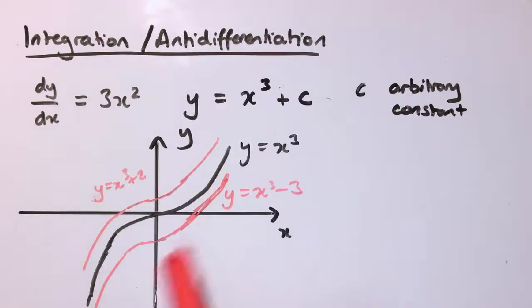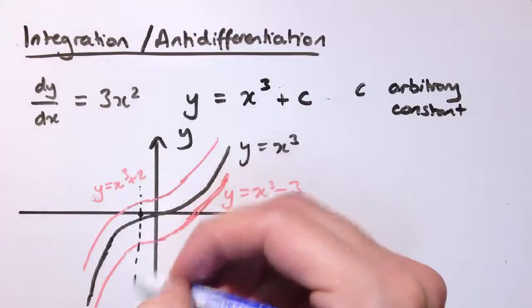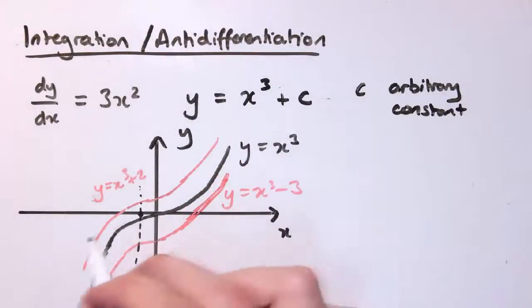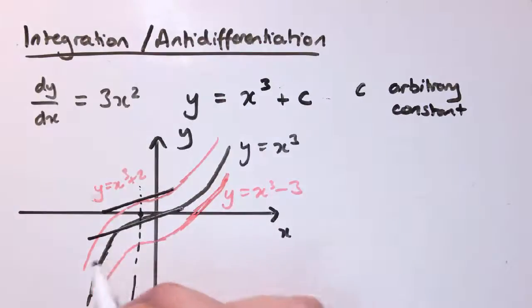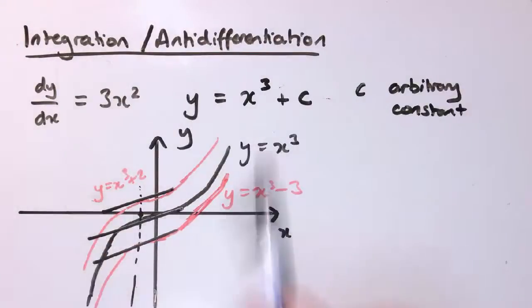So, for any given value of x, what we're saying is all these curves have the same gradient function. If I look at a particular value of x, and I look at all of the points on these curves, the tangents will go in the same direction, they will have the same gradient functions, but they are different functions. So, simply knowing dy/dx isn't going to be enough for us to work out precisely what the function is, we would also need some other information.